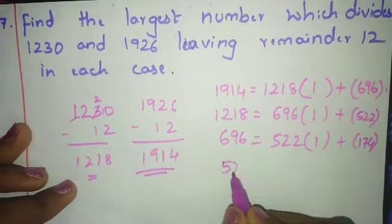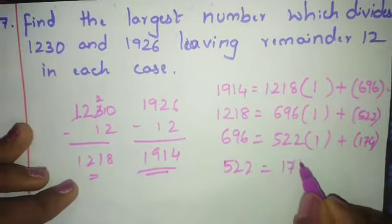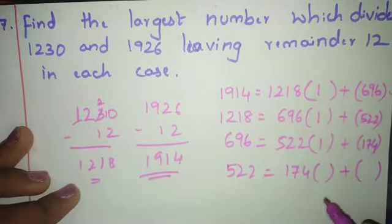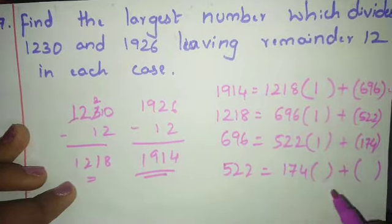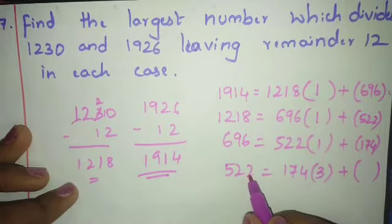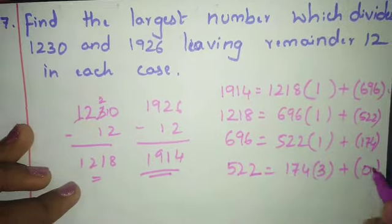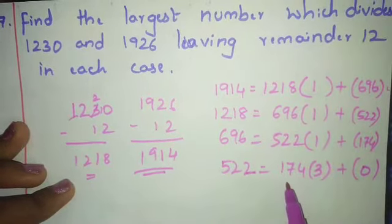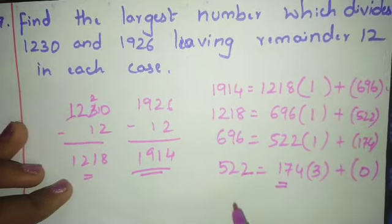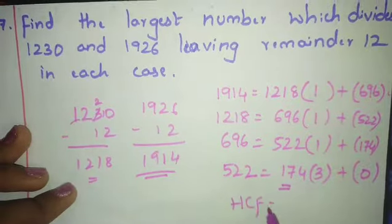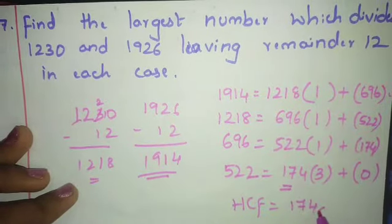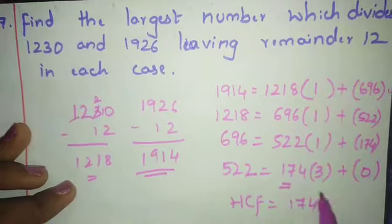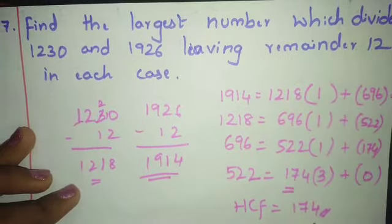Now 522 = 174 × 3 + 0. 174 × 3 is 522, so remainder is 0. Therefore HCF is 174. This is your largest number which divides 1230 and 1926 leaving remainder 12.